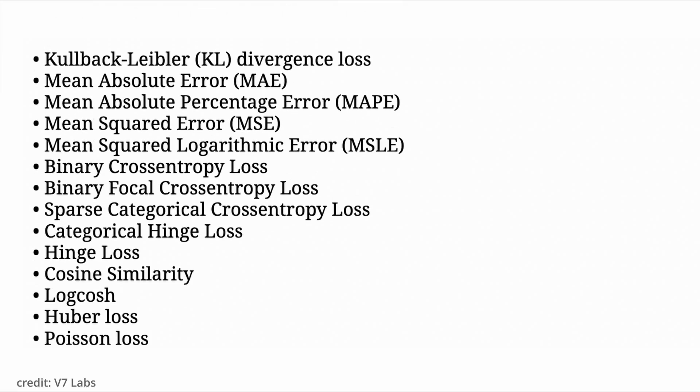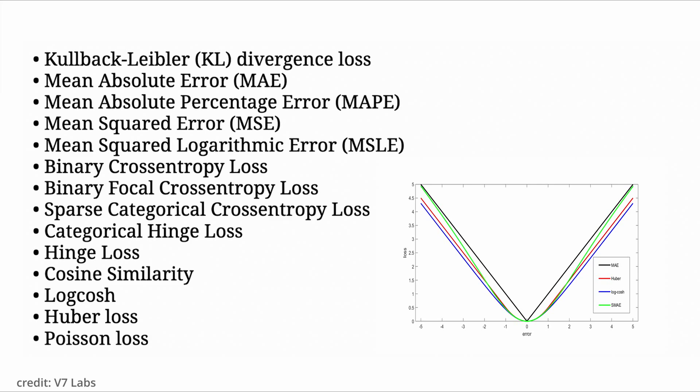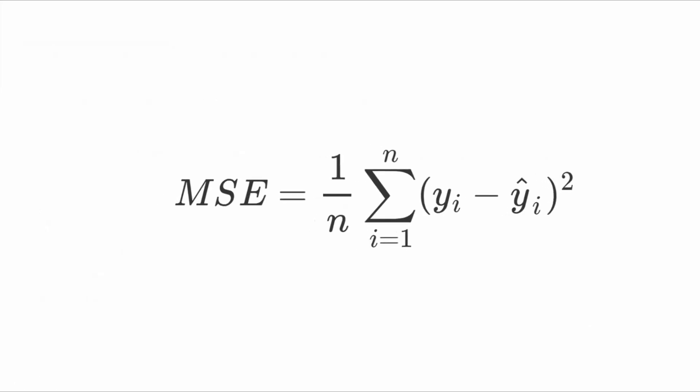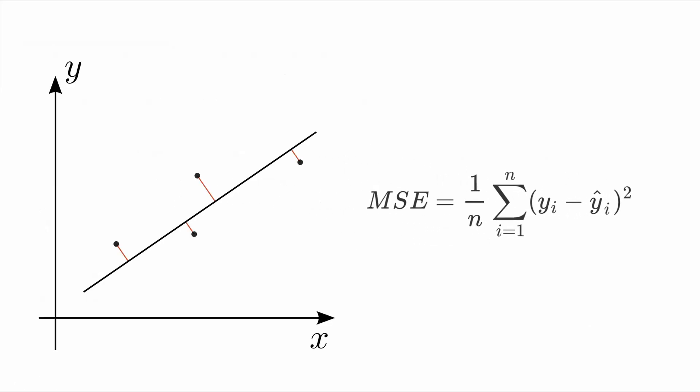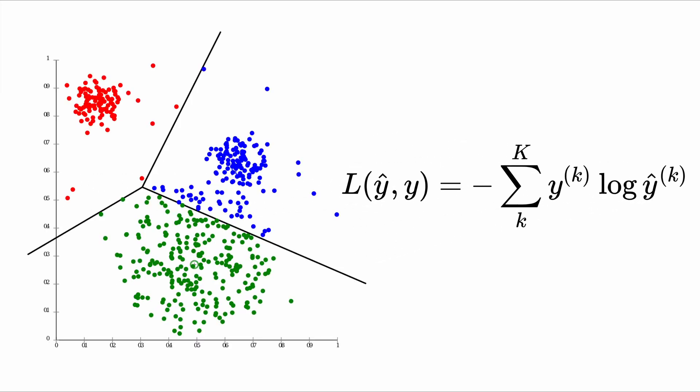Different mathematical formulas for loss are used for different tasks. For example, different variations of mean squared error work well for regression problems, whereas classification problems are better off with the variations of cross entropy loss.